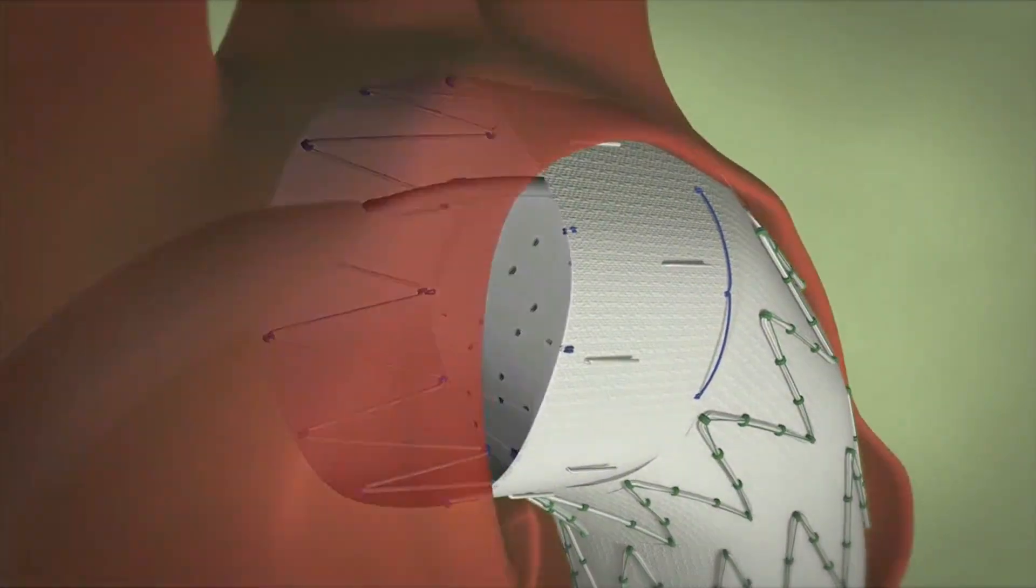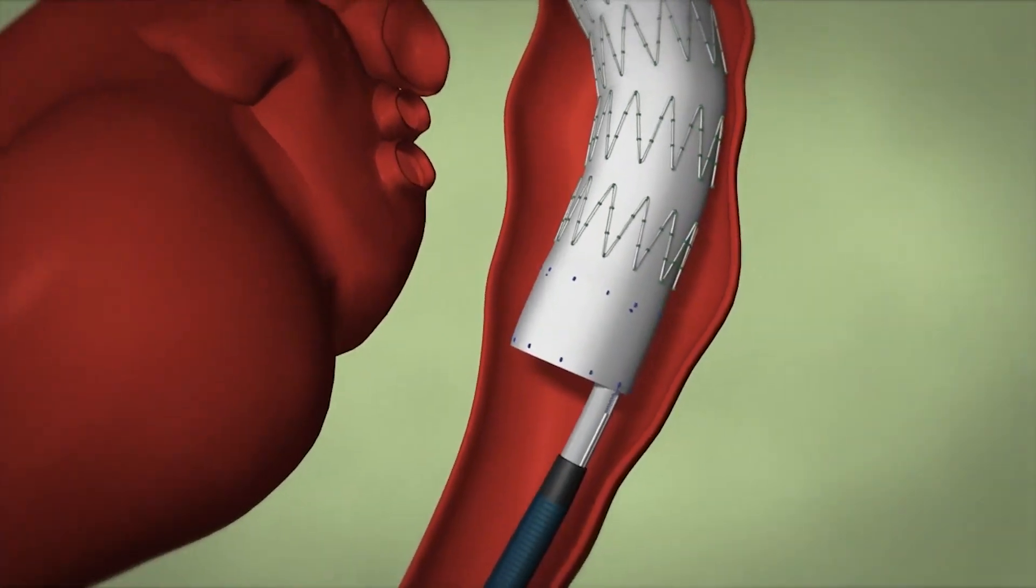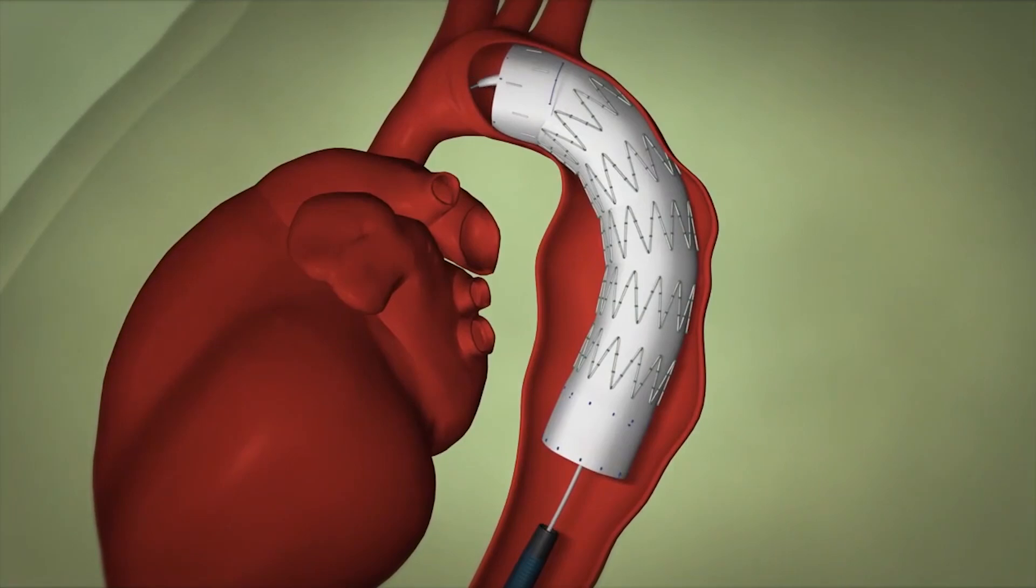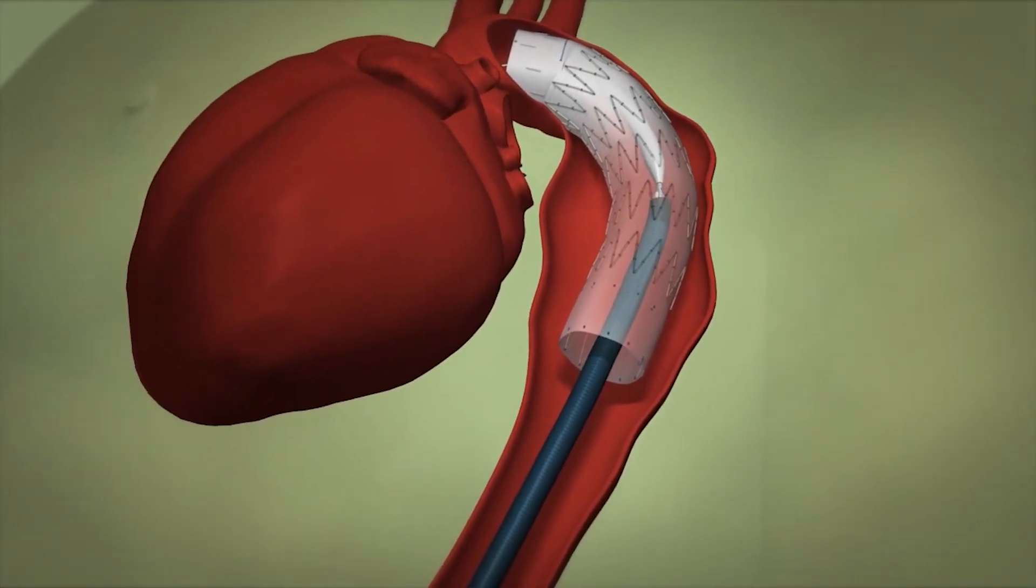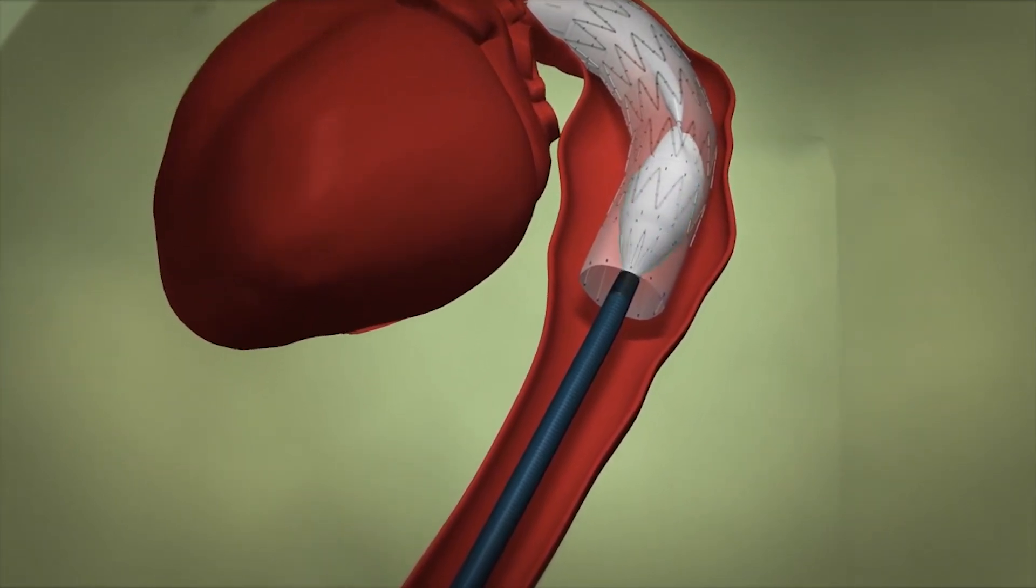Once the device is fully expanded it is secure. As you can see, the device is not long enough to have a seal below the aneurysm, so a second device is inserted through the blue catheter you now see moving into the first device.